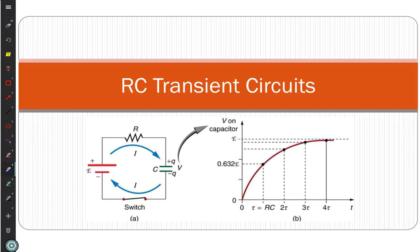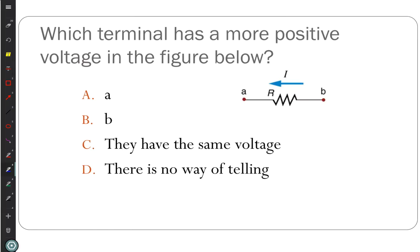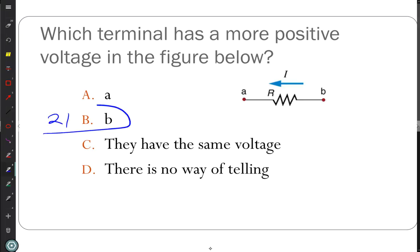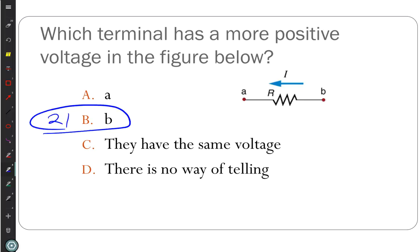There was no time component in the circuit problems we've been working on up to this point. Let's start with some clicker questions. Number one: which terminal has a more positive voltage in the figure below? Everyone answered and every single person was correct. We understand the importance of identifying what direction the current arrow is, which is going to be really beneficial in the next lab because that's a key component of it.